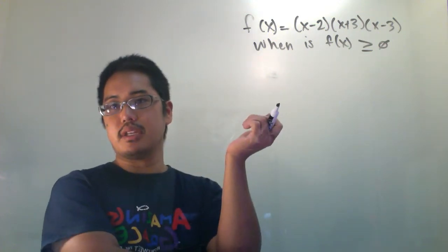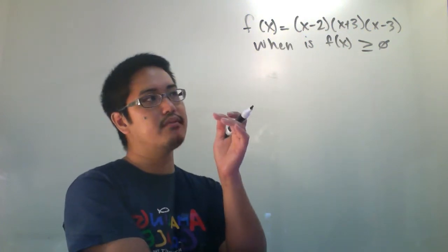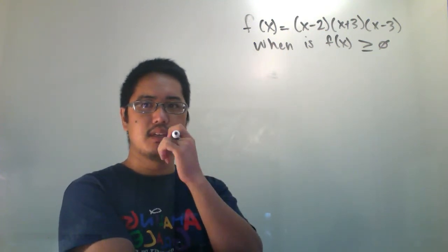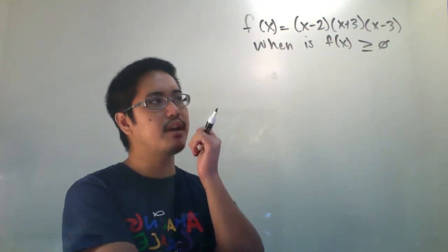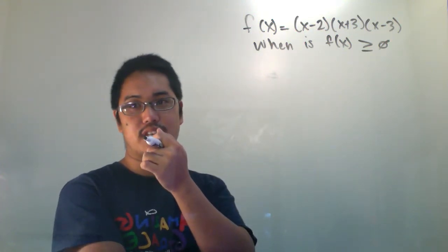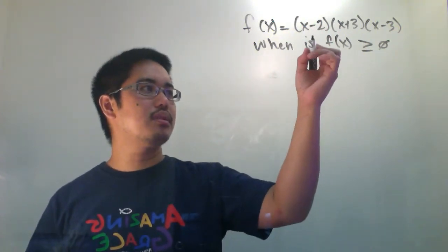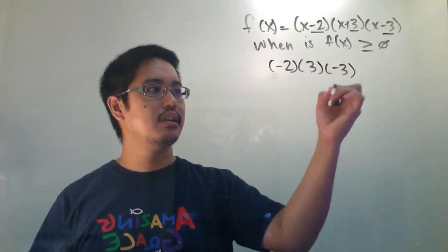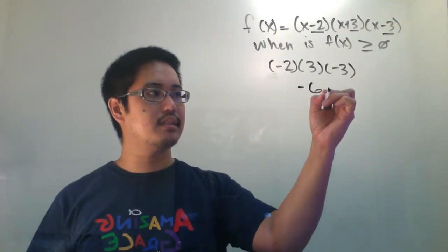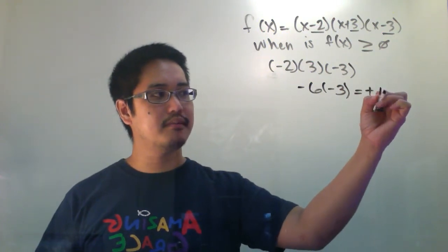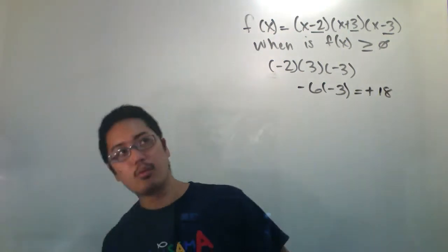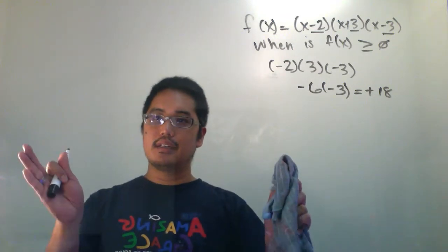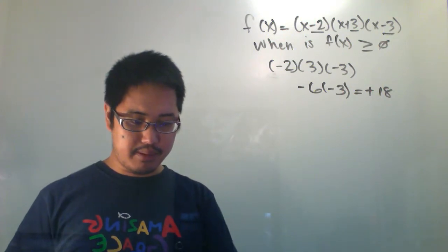Here's a tougher question — what do you think the y-intercept is going to be? I'll ask an easier version: is the y-intercept positive or negative for this function? Kaylin says positive — I agree. In fact, Kaylin says positive 18, and I totally agree, because if you multiply the constant terms: negative 2 times positive 3 times negative 3 gives you negative 6 times negative 3, which is positive 18.